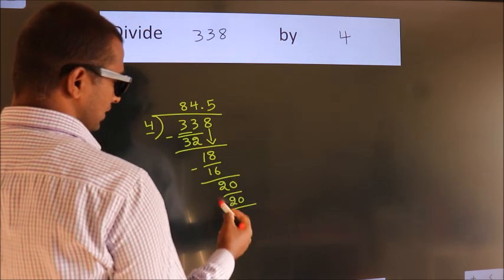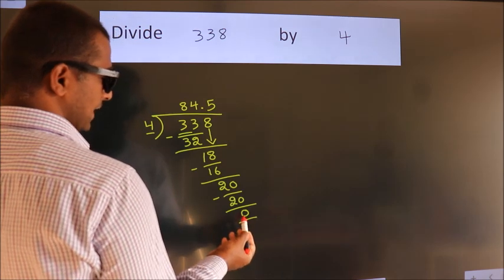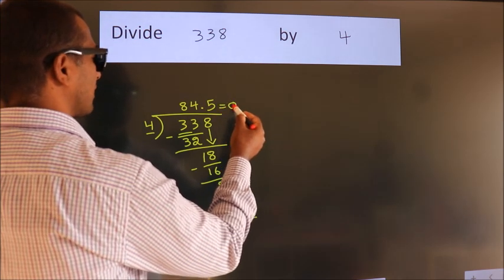Now, we subtract. We get 0. We got remainder 0. So, this is our quotient.